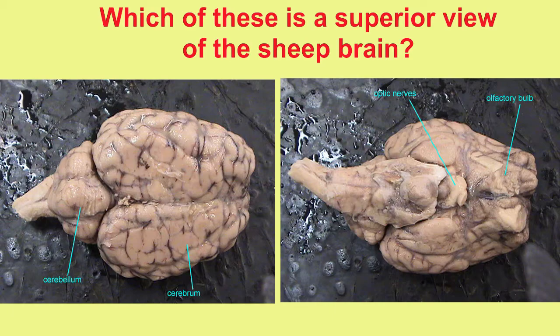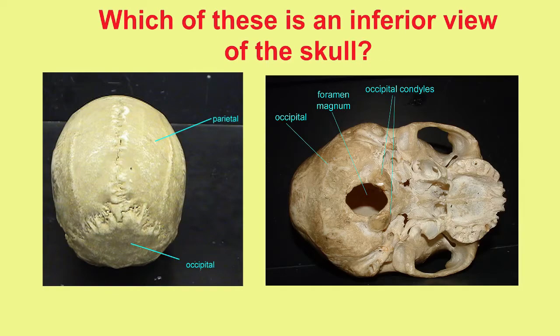Another reason anatomists need to know these terms is that when one looks at the picture of an anatomical structure, you have to know what view you're looking at. For example, in these images of the brain, they are both pictures of the sheep brain, but they look completely different, because one is the superior view and one is the inferior view. And depending on which view you have, you will see very different structures.